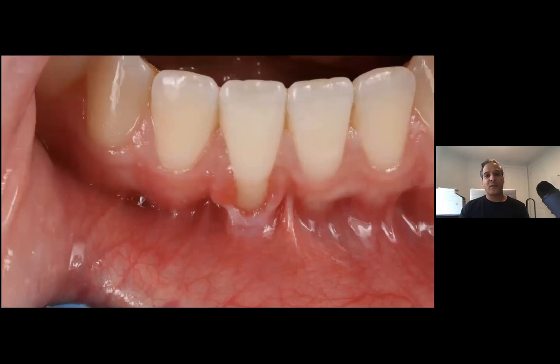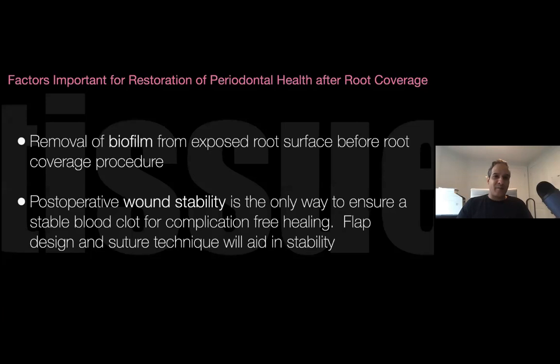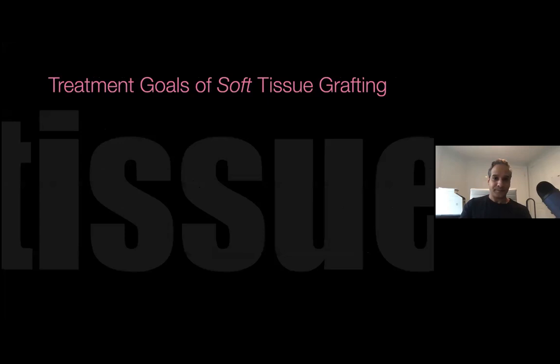Here's another post-ortho case where the root is actually positioned outside the alveolar envelope — there's no attachment, it's just mucosa and muscle pull. Cases like this must be treated because they get worse, and as they progress you get more and more bone loss. You have to remove the biofilm, clean the root surface, and ensure wound stability — no movement, no disruption of the blood clot, perfect flap design, and suturing to aid healing. Wound stability is key to getting a good result.